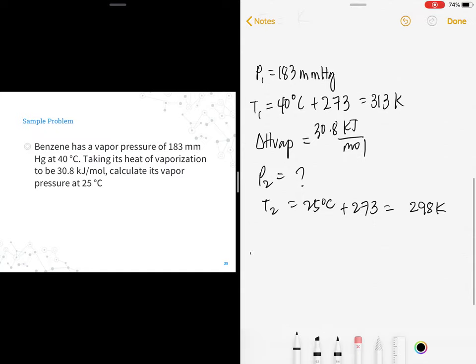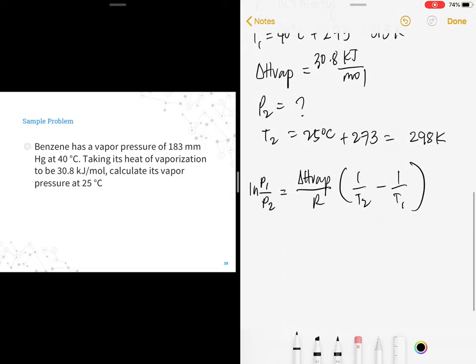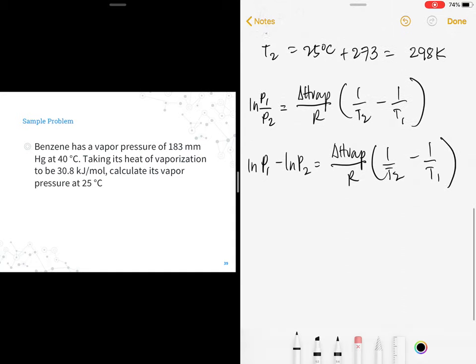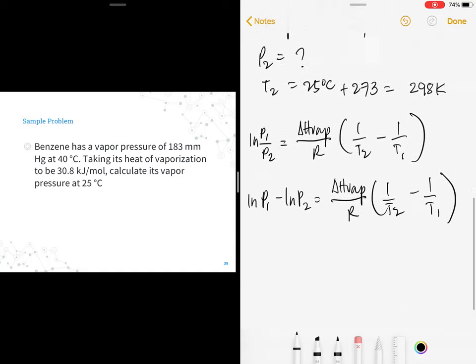What's the formula? ln(P1/P2) equals delta H vape, molar heat of vaporization, over your gas constant, times (1/T2 minus 1/T1). You can also write it this way: ln(P1) minus ln(P2) equals molar heat of vaporization over R times (1/T2 minus 1/T1).